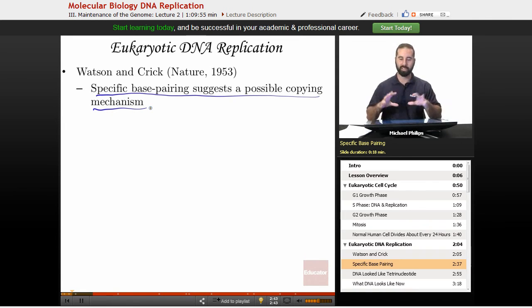This is important because at the time, protein was thought to be the genetic material, because they didn't see any type of copying mechanism for DNA.